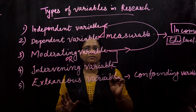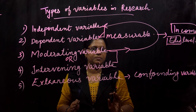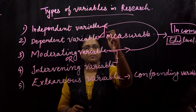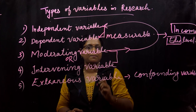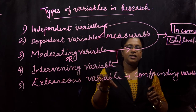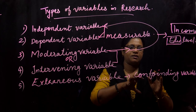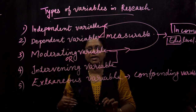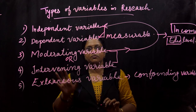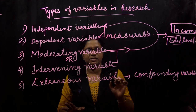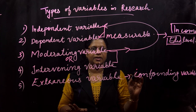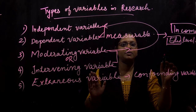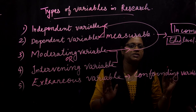Mediating or intervening variables explain how the relationship between independent and dependent variables happens. A moderating variable changes the strength of the relationship between independent and dependent variables. In the organic food study, the independent variable is consumer attitude, the moderating variables are income level and education level, and the dependent variable is purchase intention.